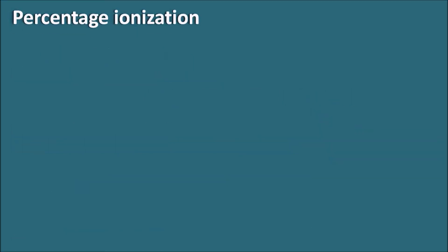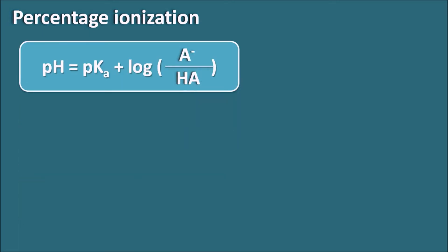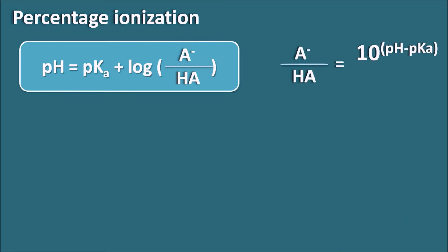Now how can we calculate the percentage ionization? Using the Henderson-Hasselbalch equation for a weak acid — pH = pKa + log([A⁻]/[HA]) — if we rearrange this equation, the ratio A⁻/HA equals 10 to the power of (pH − pKa). Taking the antilogarithm, the ratio of ionized [A⁻] to unionized [HA] is equal to 10^(pH − pKa).